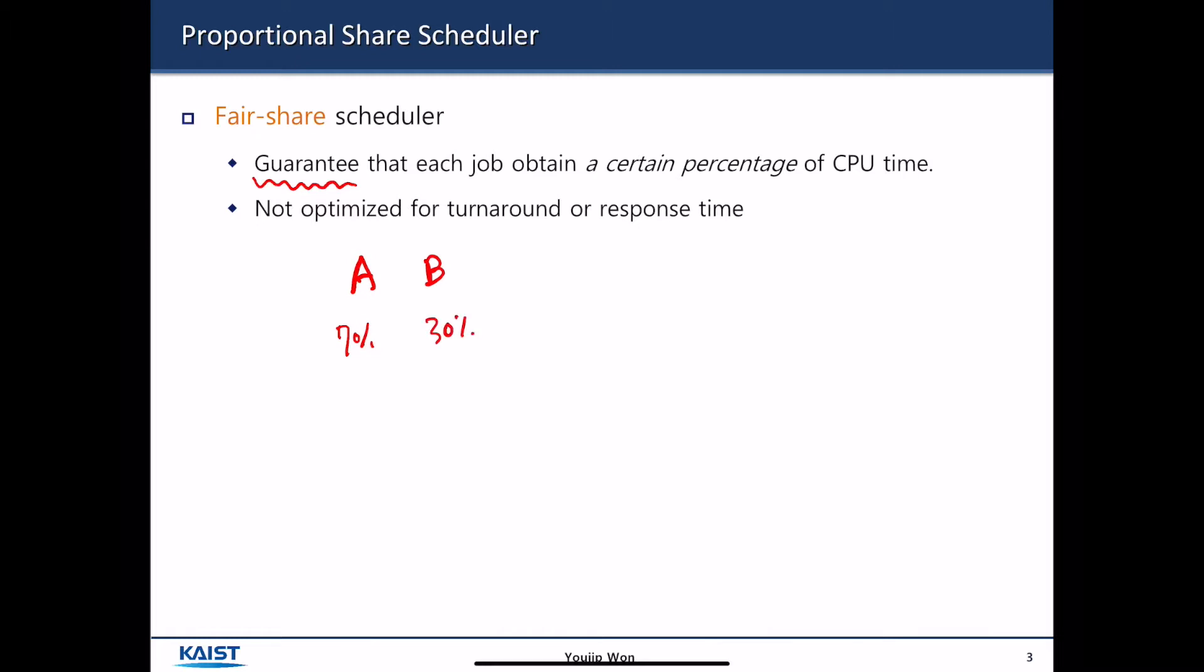So in that case, the CPU scheduler has to guarantee that process A gets 70% of CPU cycles, and process B gets 30% of CPU cycles. That is what we call Proportional Share. The Proportional Share Scheduler is not optimized for turnaround time or response time.